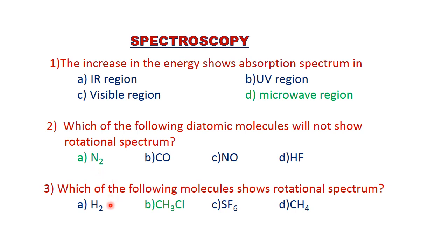Question three: which of the following molecules shows a rotational spectrum? H2, SF6, and CH4 do not have a permanent dipole moment. Only CH3Cl has a permanent dipole moment, and that molecule gives a rotational spectrum. Answer B is correct.